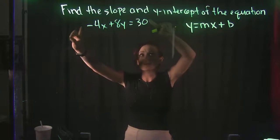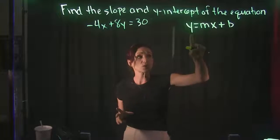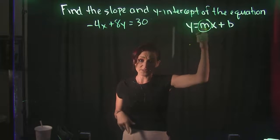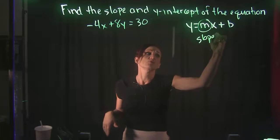Essentially, what that means is we want to take this equation and solve it for y. Because as long as our equation is solved for y, this m right here represents our slope. So whatever the coefficient of our x is, that's going to be our slope.